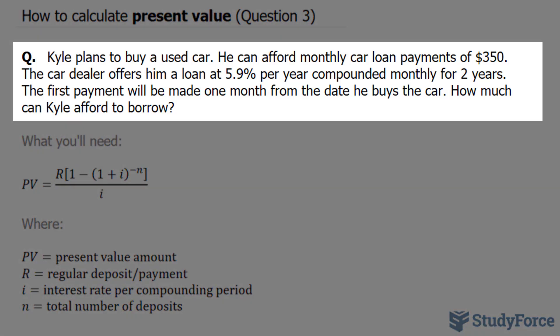Kyle plans to buy a used car. He can afford monthly car loan payments of $350. The car dealer offers him a loan at 5.9% per year, compounded monthly for two years. The first payment will be made one month from the date he buys the car.